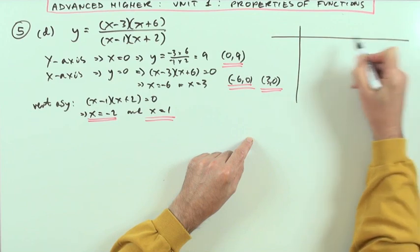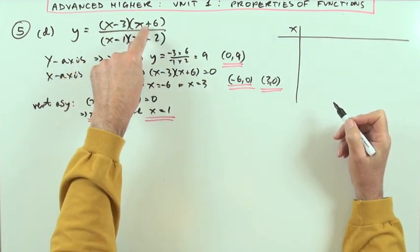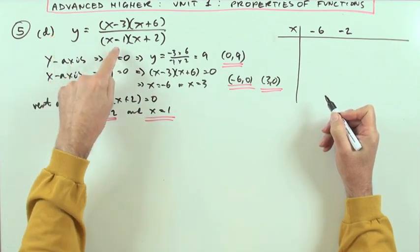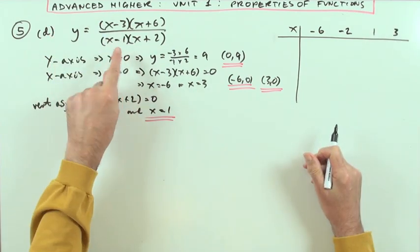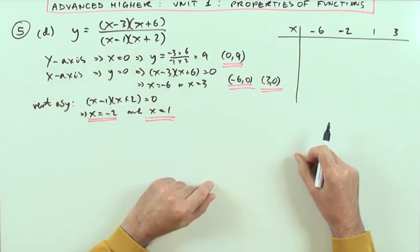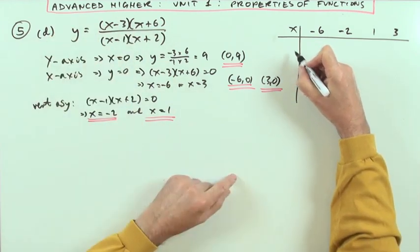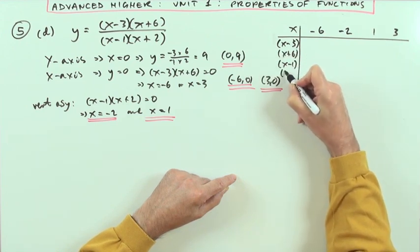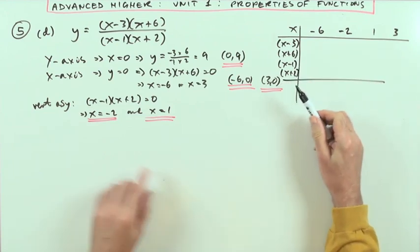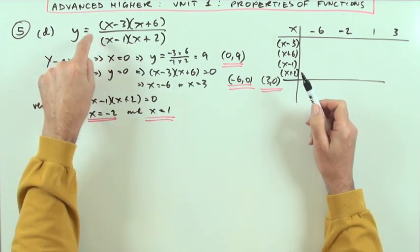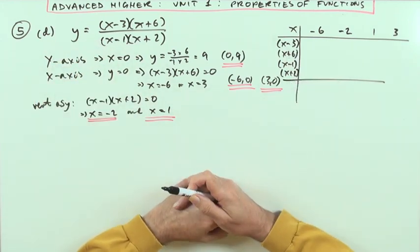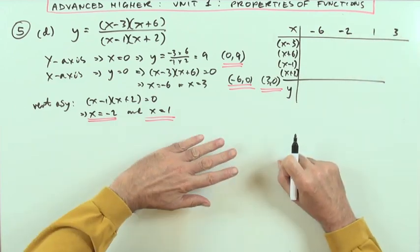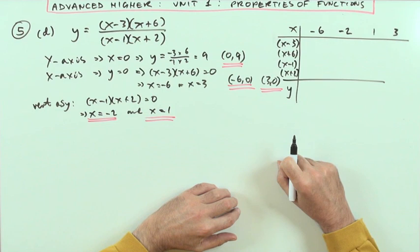Putting down a table of signs — something happens at negative six, something happens at negative two, something happens at one, and something happens at three, where things can switch between positive and negative. The factors making up y are these four factors. I'm not interested in which are multiplying and which are dividing — only the sign of the answer matters, so multiplying those signs together gives me the final sign of y. This tells me for all regions of the domain whether the graph is above or below the x-axis.